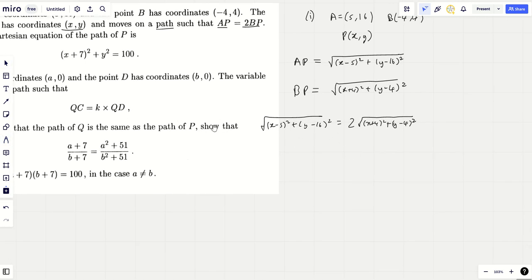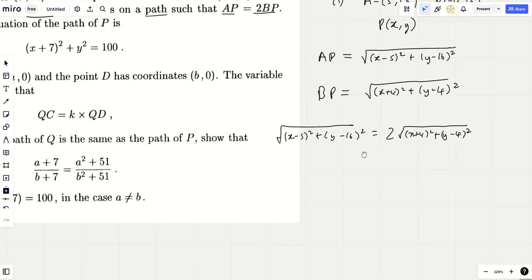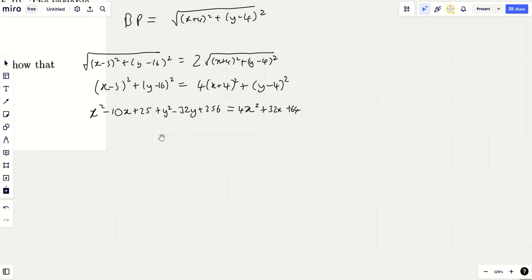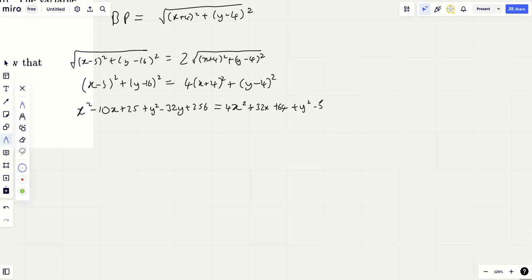I'm going to do the same for BP as well. BP is simply going to be the square root of (x+4)² plus (y-4)². And as AP equals 2BP, I'm just going to say this one is double this one. So we're going to have the square root of (x-5)² plus (y-16)² equals 2 times the square root of (x+4)² plus (y-4)².